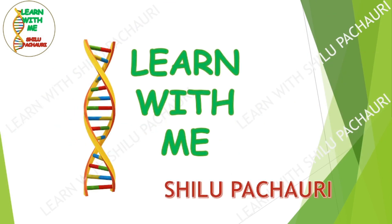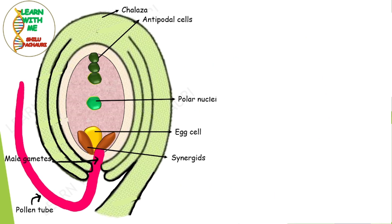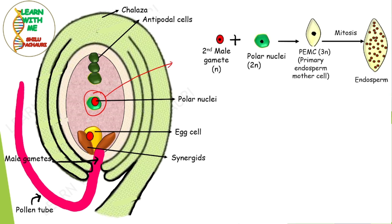This is an image of an anatropous ovule where the pollen tube enters through the micropylar region. The pollen tube contains 2 male gametes — one male gamete fuses with the egg cell, and another male gamete fuses with the polar nuclei of the central cell. This is the 2nd male gamete or polar nuclei fusion shown in this image, where the 2nd male gamete, which is haploid, fuses with the polar nuclei. The polar nuclei is diploid.